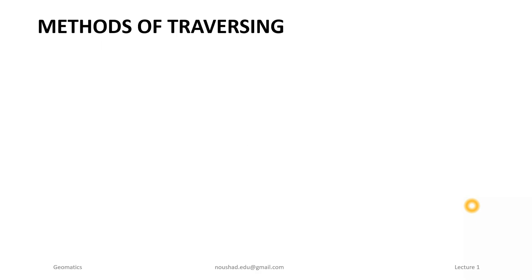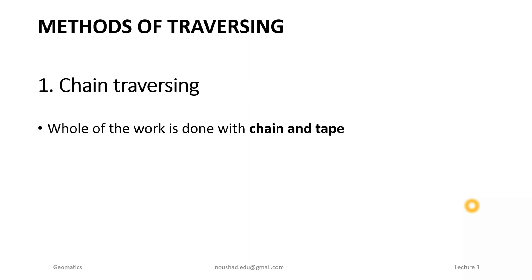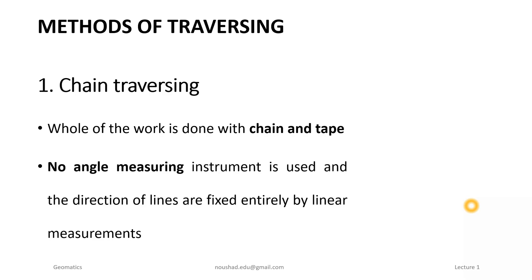The first one is Chain Traversing, in which the whole of the work is done with the chain and tape. All measurement is by chain and tape. In traverse surveying the measurement is of distance and angle, but in chain traversing no angle measuring instrument is used — only chain and tape.